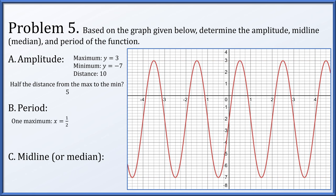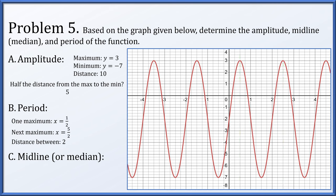Next, what's the period? We find one occurrence of a maximum at x = 1/2. The next maximum appears to be at about x = 5/2. The distance from 1/2 to 5/2 is exactly 2, so that is how long it takes the curve to repeat itself — the period is 2. Finally, to find the midline or median, we average the maximum and minimum values, and we end up with -2.